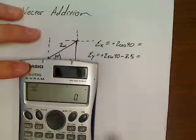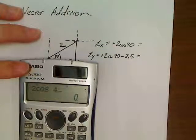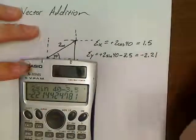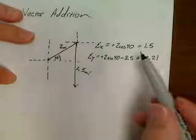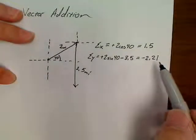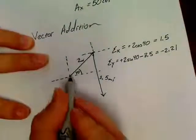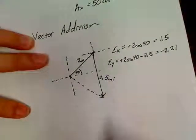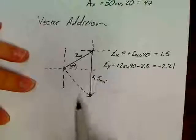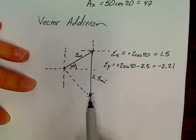So, we've got 2 cosine 40. Now, what this has done is, at this point, 1.5x, negative 2.21y, this has given us the final x and y location of this spot. So, as of right now, we know the x and y coordinates for this spot.